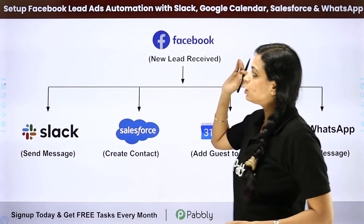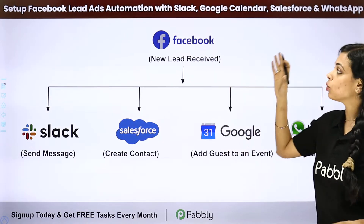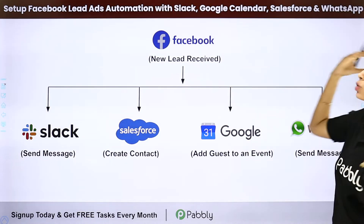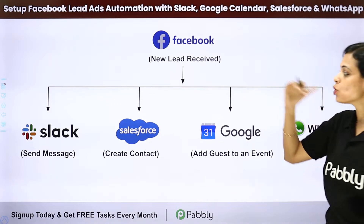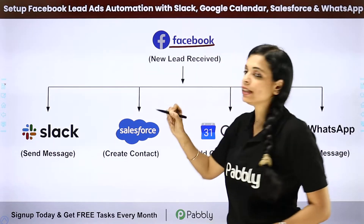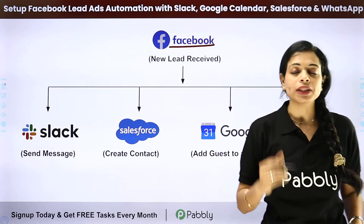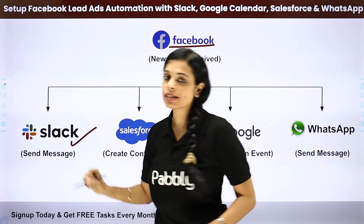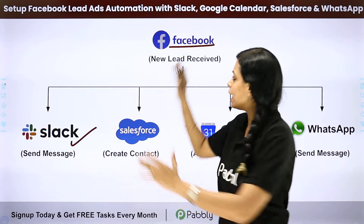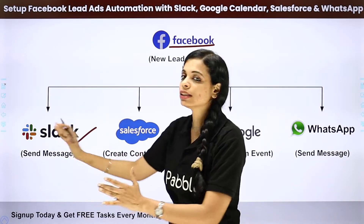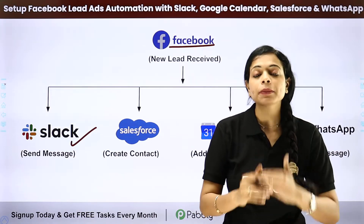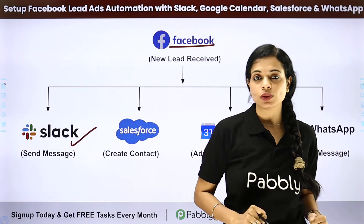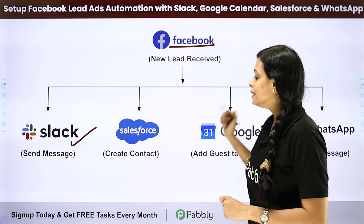Let's say that you want to set up Facebook lead ads automation with Slack or Google Calendar, Salesforce, and WhatsApp. Every time you receive a new lead through Facebook lead ads, you can send a message on Slack where your team is sitting. Everybody is on the same page, you save a lot of time communicating the details, and there is no Chinese whisper.